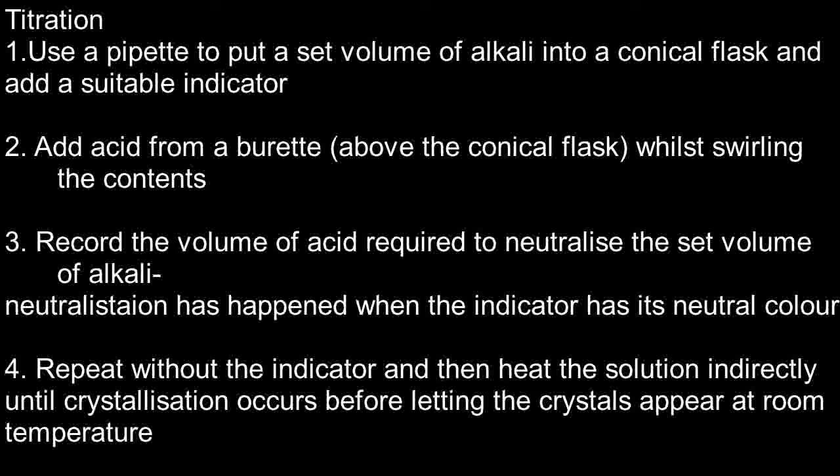In titration, use a pipette to put a set volume of alkali into a conical flask. Add a suitable indicator. Add acid from a burette while swirling the conical. Record the volume of acid required to neutralize the alkali. Then repeat and heat the solution until crystallization occurs before letting the remaining crystals appear at room temperature.